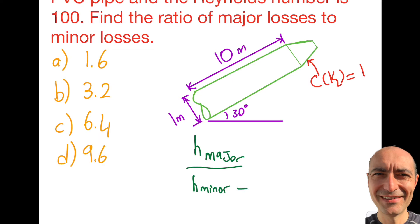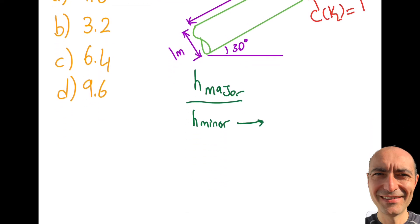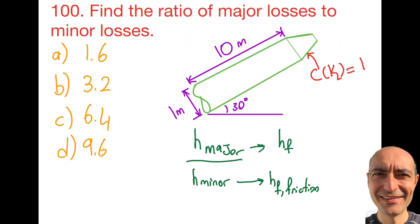This H minor, HL minor, is written as H sub F comma friction in the reference manual, and this is simply written as H sub F. So I'm asking you the ratio between those two.